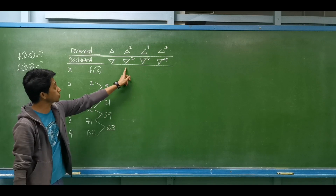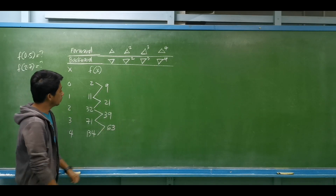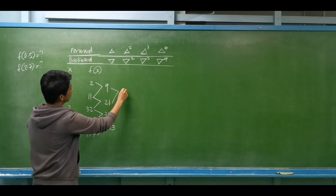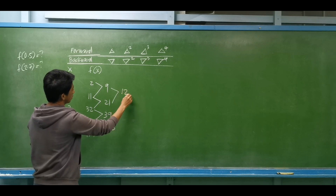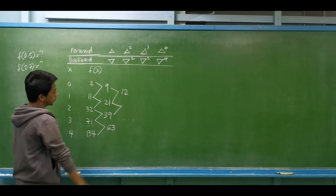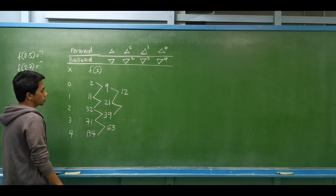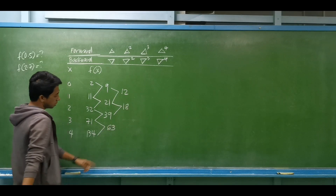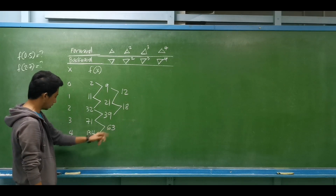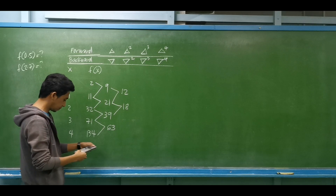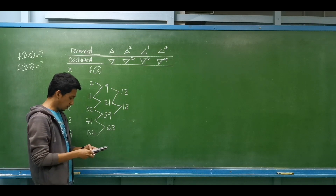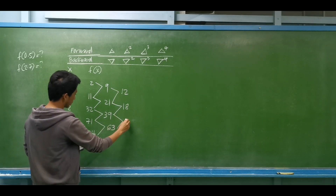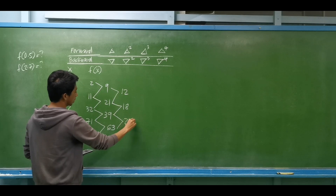For the next column of second differences: we have 21 minus 9 is 12. Then 39 minus 21 is 18. Then 63 minus 39 is 24.